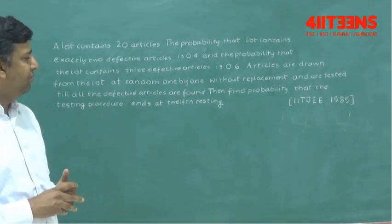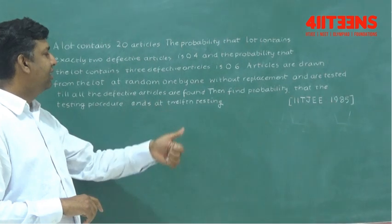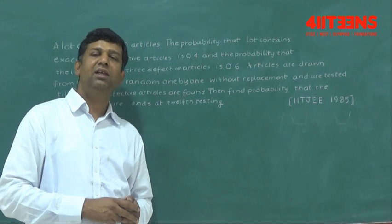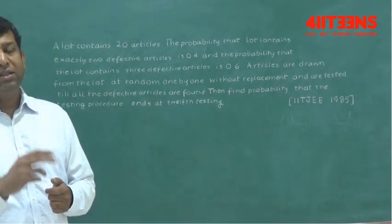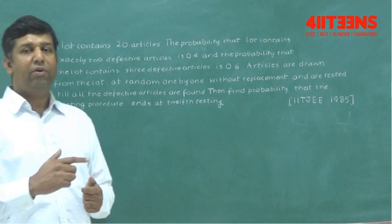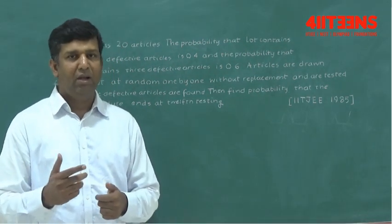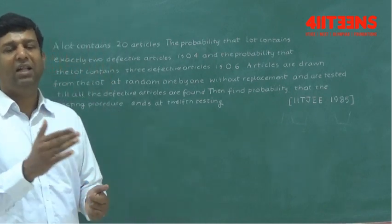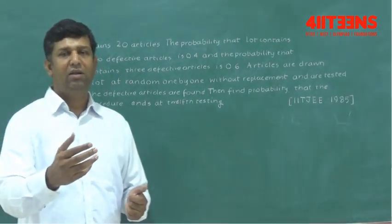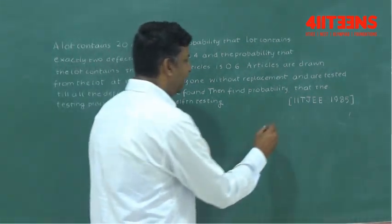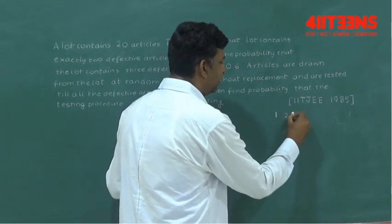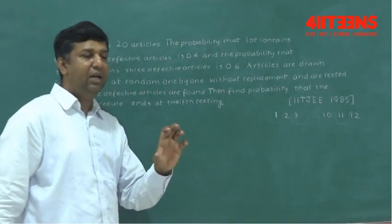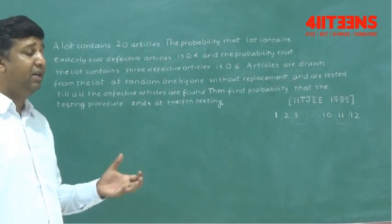But we need to find out the probability that the testing procedure ends at 12th testing. Testing procedure means if the bag contains 2 defective, the last defective you're going to test should come at the 12th draw, and the defective before that can come in any of the first 11 draws. So suppose one defective can come in position 1, 2, 3, up to 11, and the last at position 12.